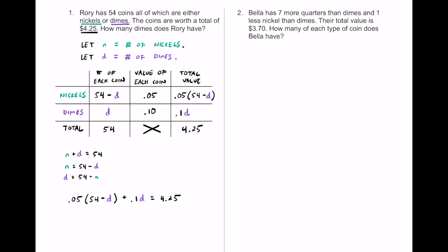Now let's start solving this multi-step equation with one variable. It was important to express the number of nickels as 54 minus d. We distribute 0.05 to both terms inside the parentheses using the distributive property. 0.05 times 54 equals 2.7, then we subtract 0.05d. Adding the 0.1d gives us: 2.7 minus 0.05d plus 0.1d equals 4.25. We can notice these are like terms.